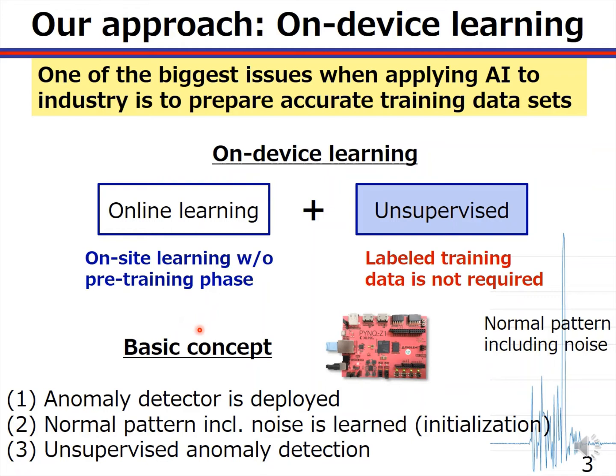The basic concept of our approach is very simple. First, an anomaly detector is deployed in an environment. Second, normal patterns, including noises, are learned at the environment in the initialization step. Then, unsupervised anomaly detection is performed based on online frequency learning.